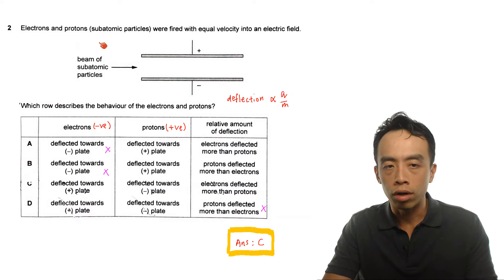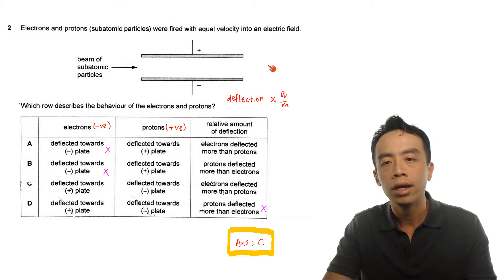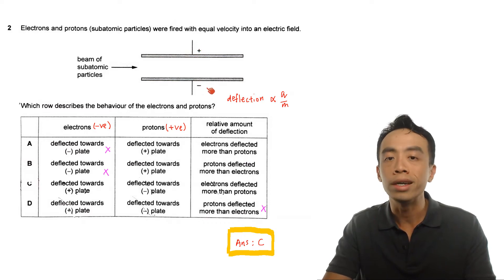Electrons and protons, subatomic particles, were fired with equal velocity into an electric field. So we have a beam of subatomic particles which will include electrons and protons through this electric field and we notice on top the electrode is positively charged and at the bottom the electrode is negatively charged.